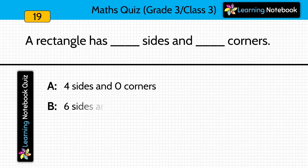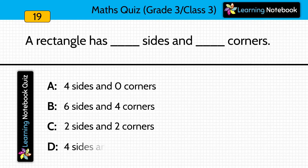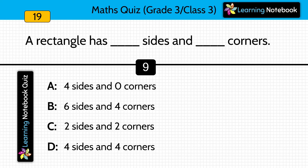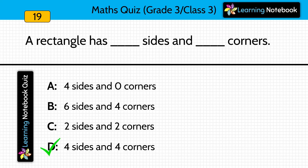A rectangle has dash sides and dash corners. How many sides and corners does a rectangle have? Answer is 4 sides and 4 corners.